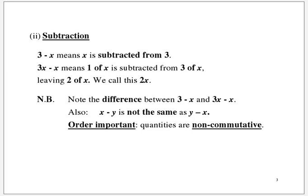The second of the 4 basic rules: subtraction. 3 minus x means x is subtracted from 3. 3x minus x means 1 of x is subtracted from 3 of x, leaving 2 of x. We call this 2x. Note the difference between 3 minus x and 3x minus x.